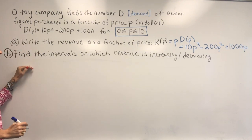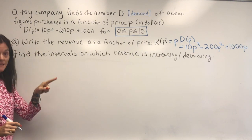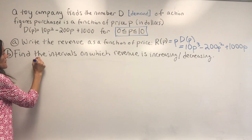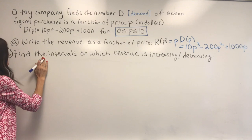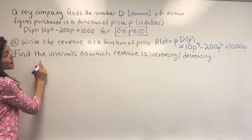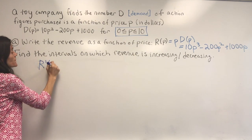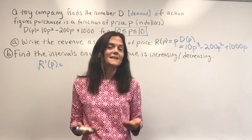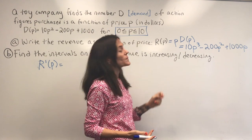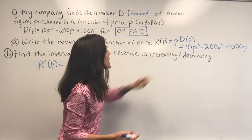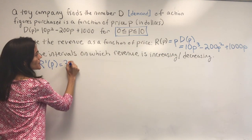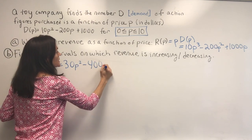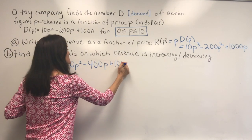The first thing we want to do, if we want to look at increasing and decreasing, is find our critical points. This involves R prime — the derivative. When the derivative is 0 or does not exist in this interval, we will have a critical point. So we have R'(P) = 30P squared minus 400P plus 1,000.